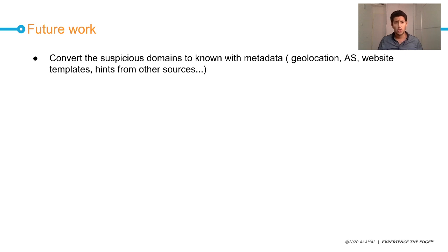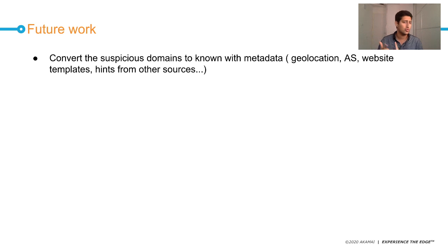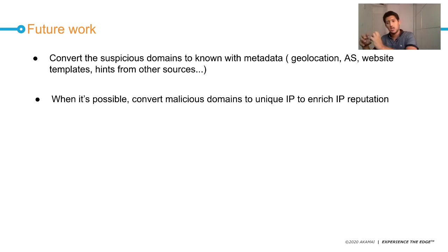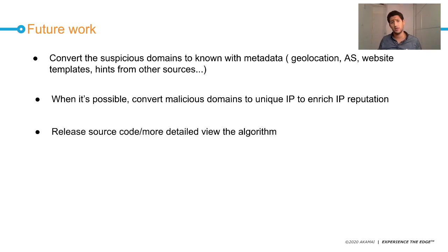For future work, we want to enrich those 8K suspicious domains with metadata such as geolocation, autonomous system, and website templates — features that could feed a machine learning model. Where possible, we can enrich the IP reputation with IPs from our domain data. In our current case, we use IP reputation to enrich our domain intelligence. We are also thinking about releasing a full detailed view of the algorithm so it can benefit the broader community.